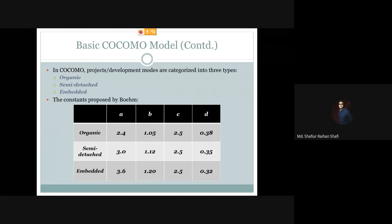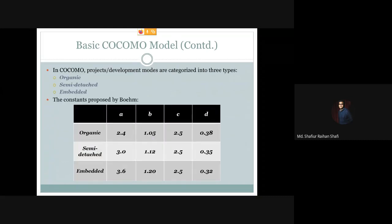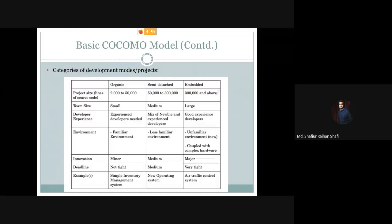This is all about the expressions or rules that form the basic COCOMO model. We have seen the expressions, the rules, and the different values of the constants used, according to the project type or development mode. I hope you have understood everything discussed in this tutorial. In the next tutorial we will discuss the categories of development modes — Organic, Semi-Detached, and Embedded. See you in the next tutorial, thank you.